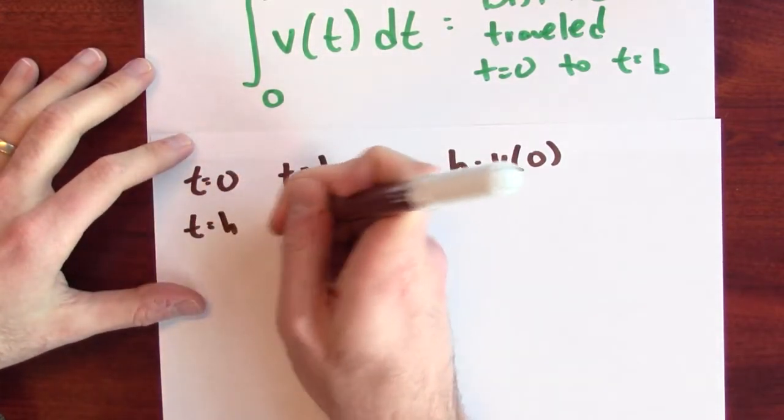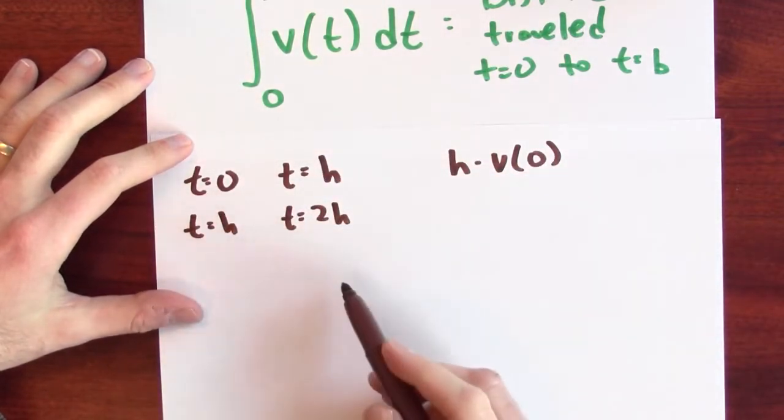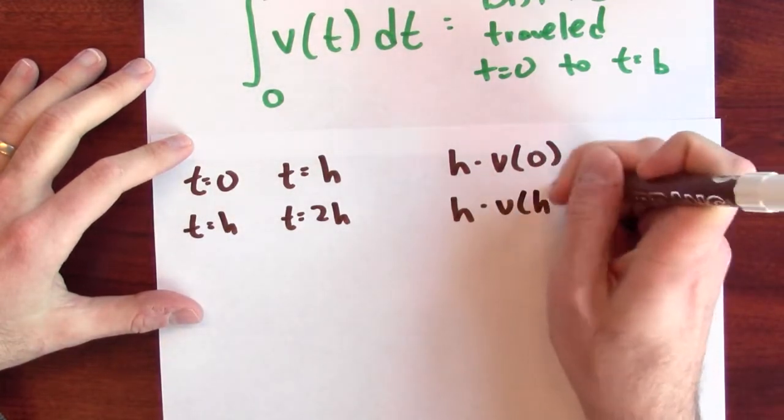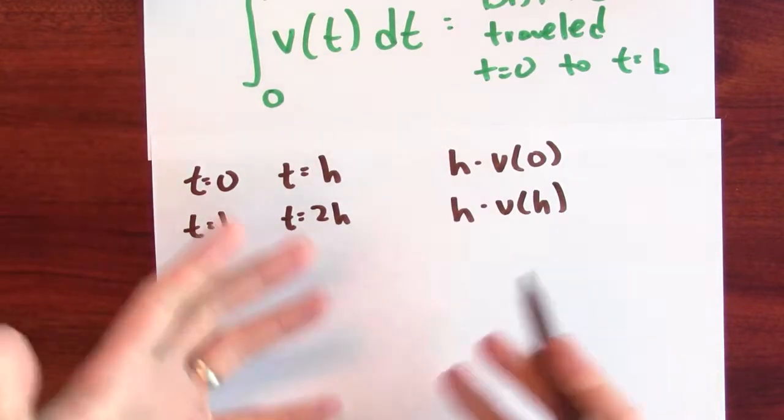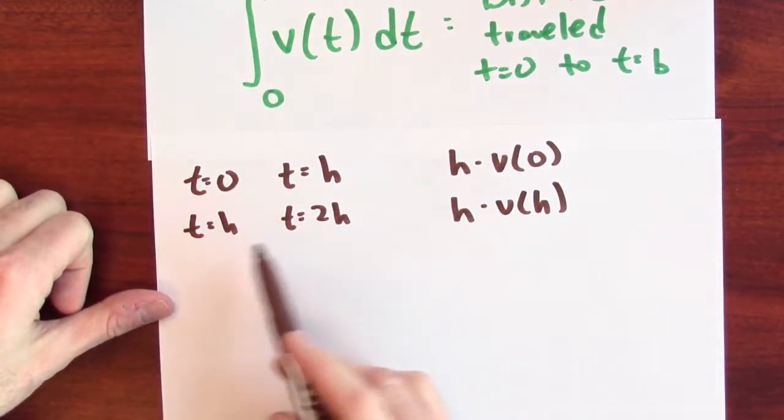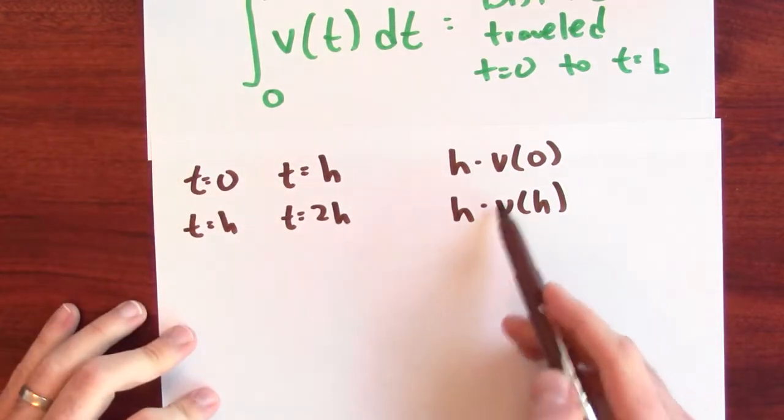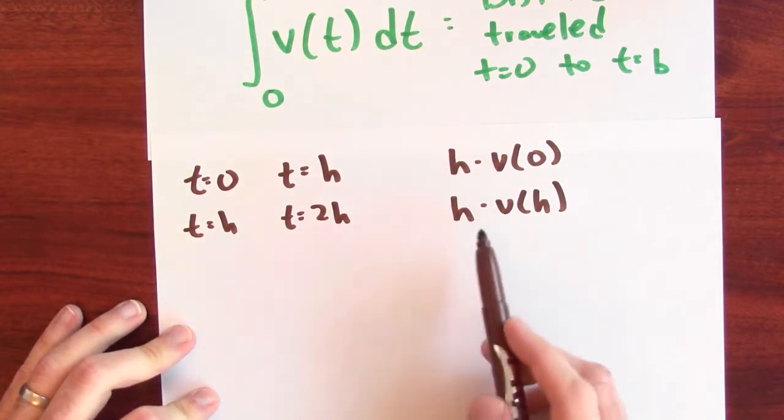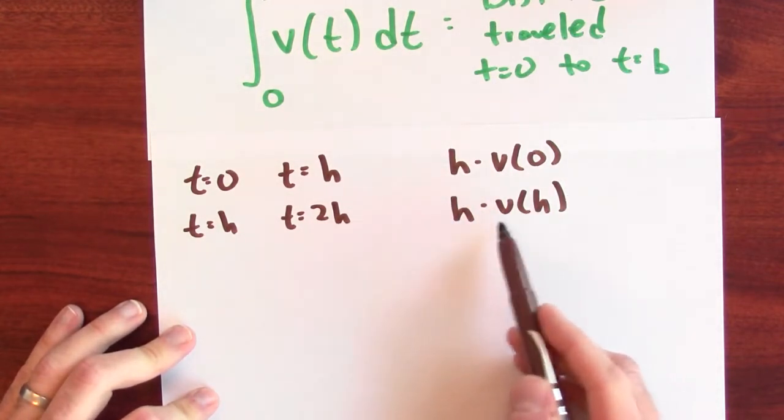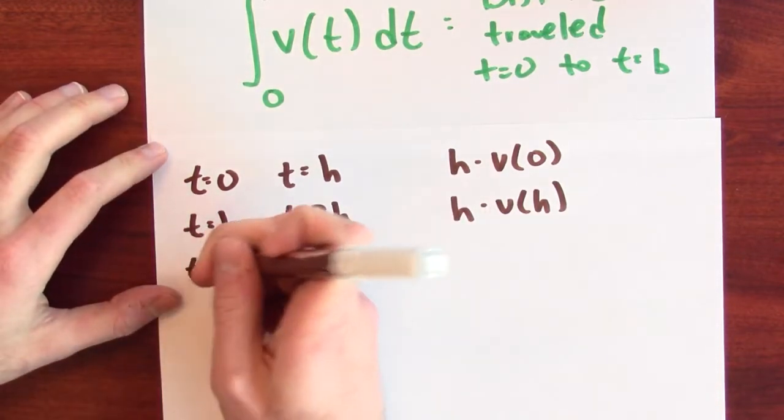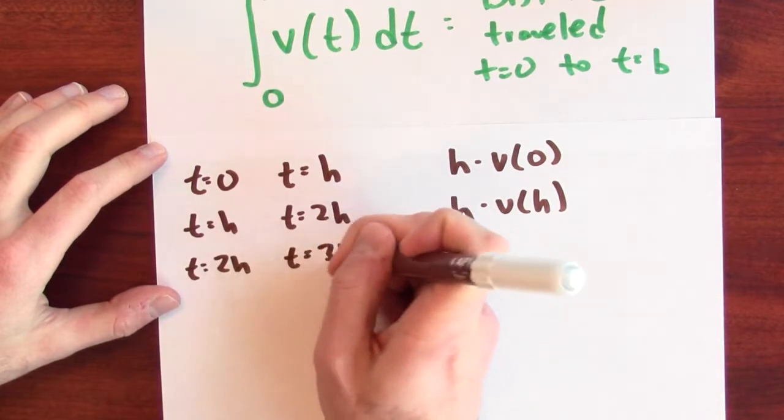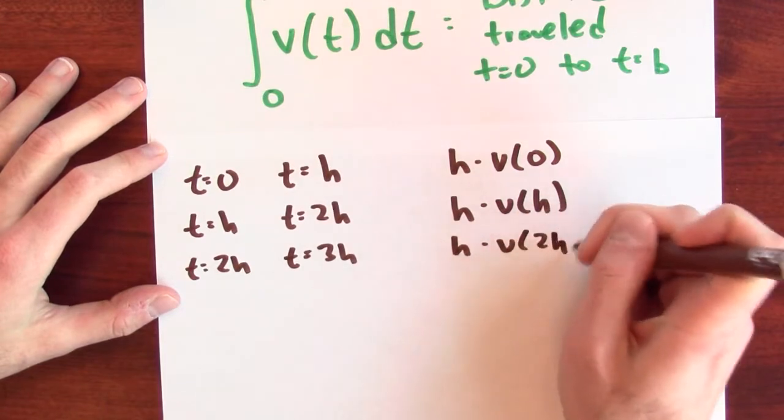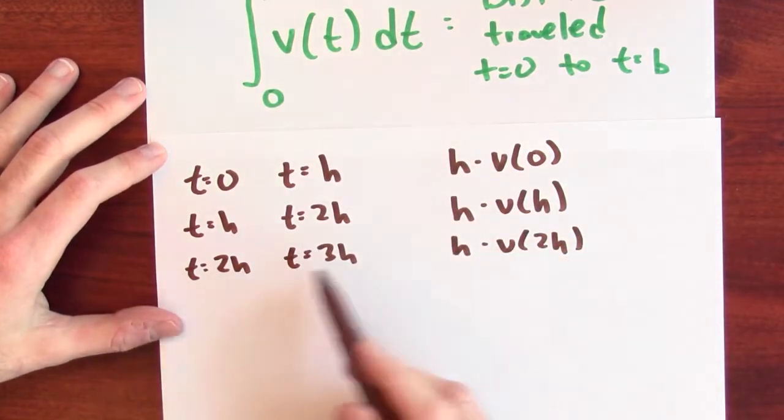What about between time h and time 2h? How far did I travel there? Well, the time that elapsed was h units of time, and how fast was I going? I could use v of h, my velocity at time h, as a good approximation for my velocity over that time period. My velocity is not necessarily constant, but this is standing in for a reasonable approximation if my velocity is not changing too rapidly. So this is how far I traveled—time times velocity is distance. Now how far did I travel between time 2h and time 3h? Well, again, how long was I traveling for? h units of time, and how fast was I going? v2h is a reasonable approximation for my velocity during that time period.